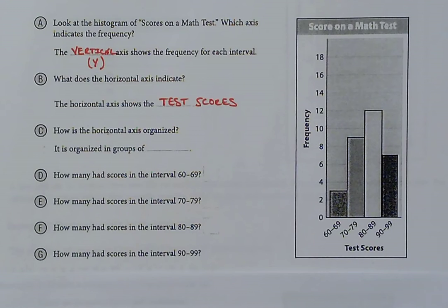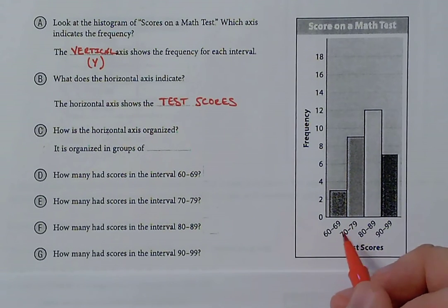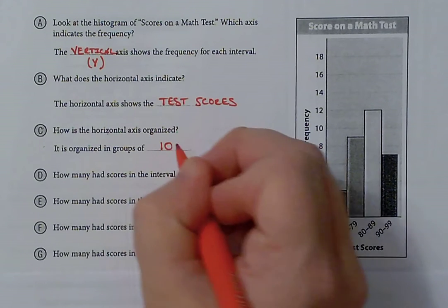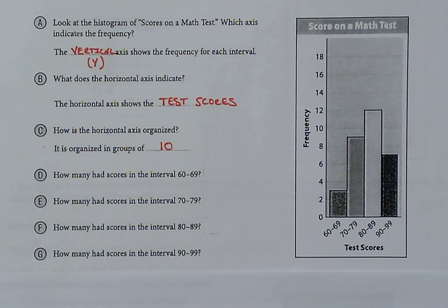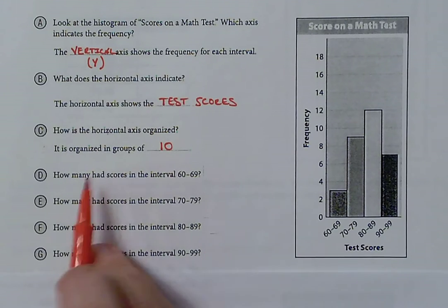For part C, how is the horizontal axis organized? It is organized into groups of 10, because from 60 to 69 there are 10 different numbers that occur — same for 70 to 79, 80 to 89, and 90 to 99. For parts D, E, F, and G, they want us to indicate how many scores occurred in each of those intervals based off the histogram.